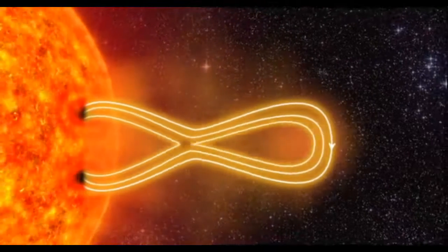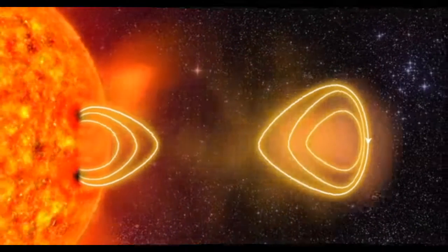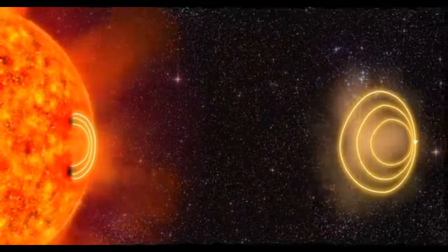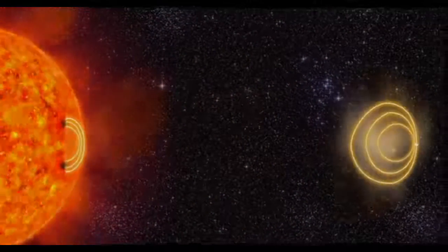And then the rubber band breaks. Several billion tons of plasma is hurled out from the sun. This is called a solar storm.